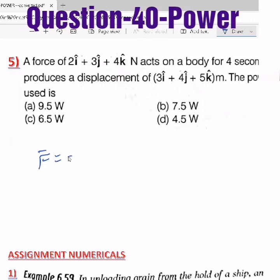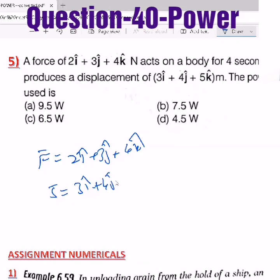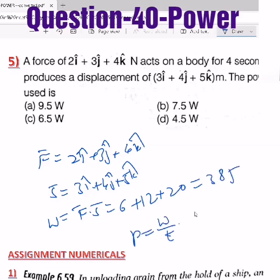Let's see one last and final question. Here force is given in vector form: 2î + 3ĵ + 4k̂, and displacement is given 3î + 4ĵ + 5k̂. Then work done will become F⃗·s⃗, that is 2×3 = 6, 3×4 = 12, 4×5 = 20, so 38 joules. Then power equals work by time, that is 38/4 seconds, so 9.5 joules per second or watt. This is the simple kind of question they can ask based on power.